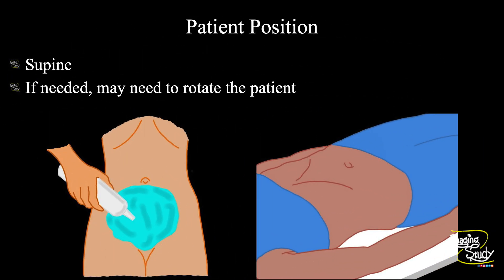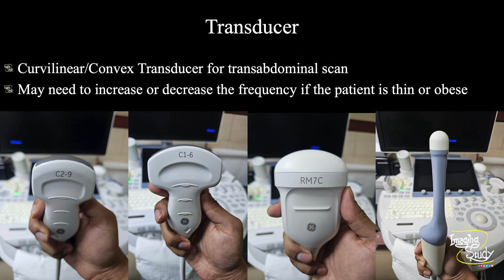We scan in the supine position but if needed you can rotate the patient. We use a regular curvilinear or convex transducer for transabdominal scanning; for transvaginal scanning you use the transvaginal probe. Depending on obesity and the distance of the heart from the transducer surface, you may need to increase or decrease the frequency. In fetal echo you may have to change a lot of settings, unless you want to use only the fetal heart preset of your machine.